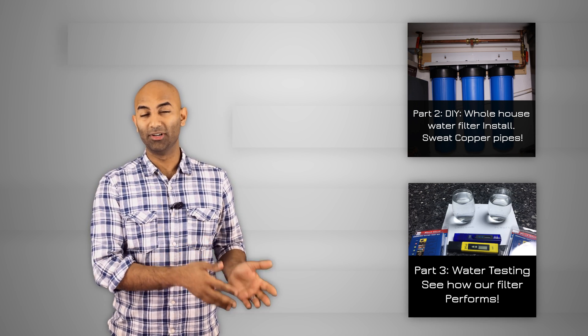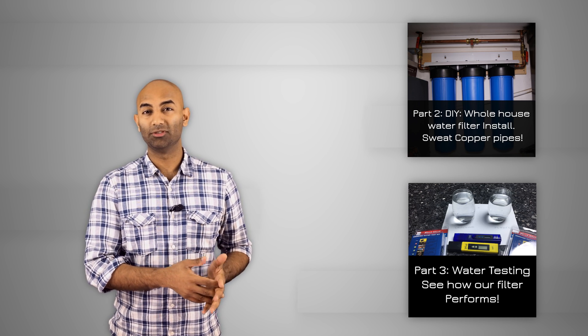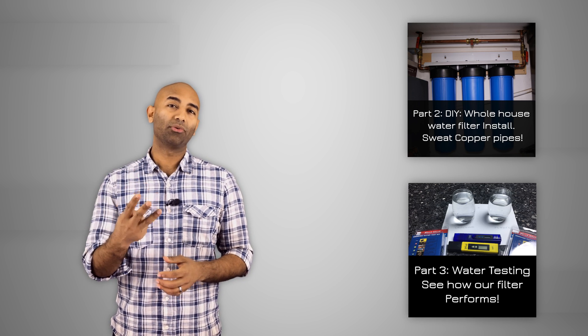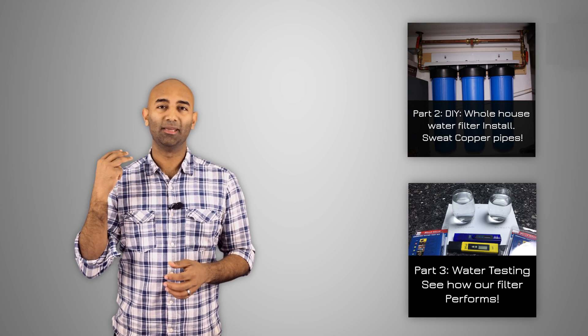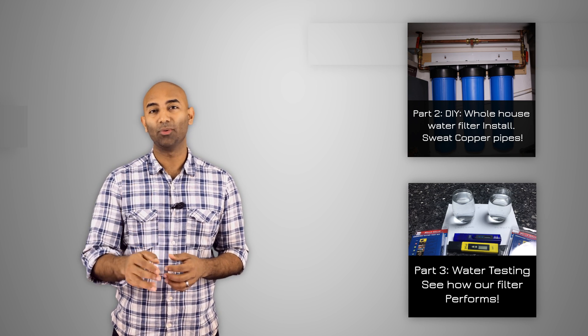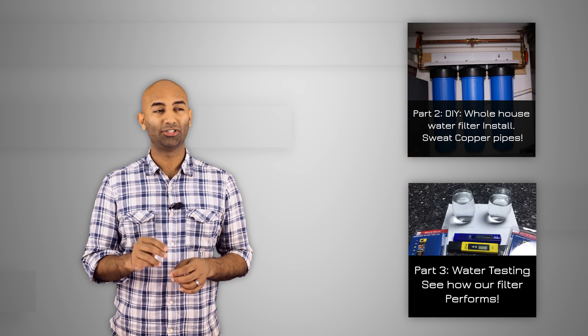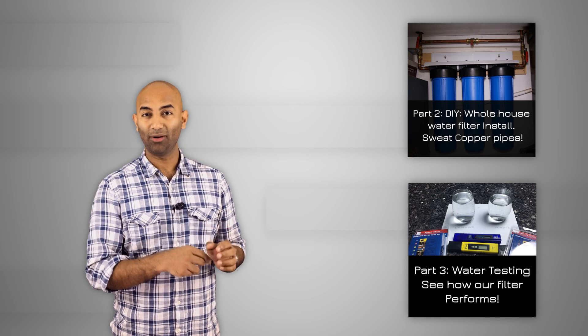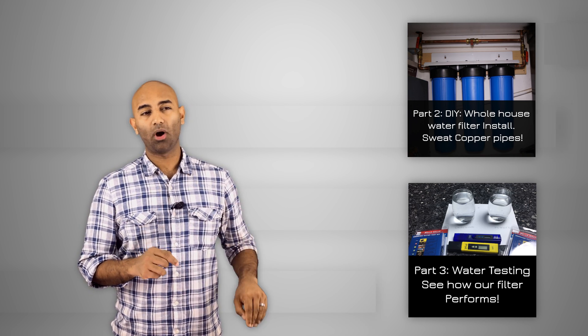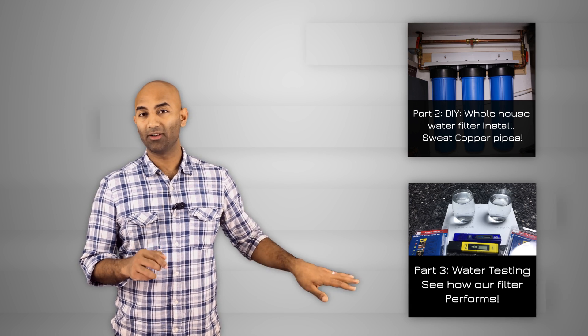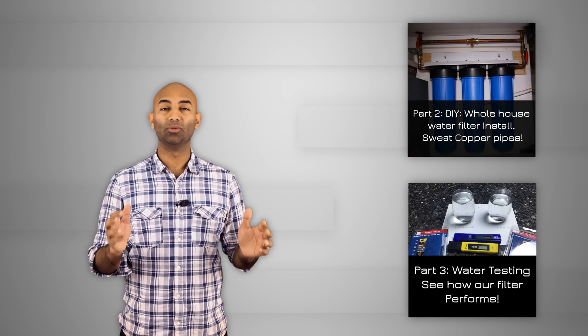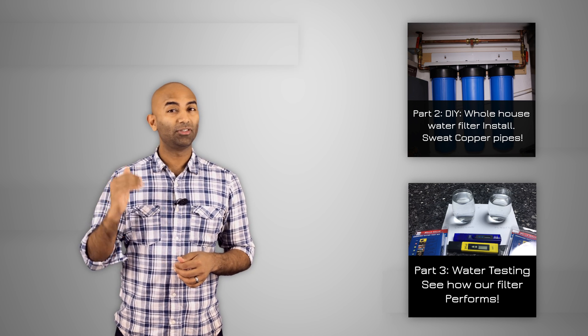Part three of our video is going to cover the performance of our filters and how it did. We went out on Amazon and got two water test kits and we're gonna check the water that comes into the house through the filter and the water that goes to the irrigation system outside for the plants which isn't filtered and we're gonna compare the two and we'll see how it goes. So we're gonna have links to the next two videos.